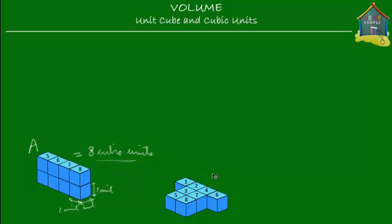Now, what is the volume of this object called B? It's still eight cubic units, because I used eight unit cubes to make this object. So you see, different objects can have the same volume. Although these two solids have different shapes, they can still have the same volume, as long as we use eight unit cubes for each of them.